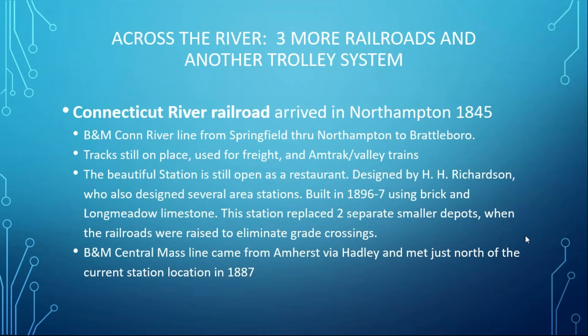Across the river there were more railroads. The Connecticut River Railroad arrived in Northampton about 1845 — that's the B&M Connecticut River line from Springfield through Northampton to Brattleboro. Those tracks are still in place, used by freight, and the Amtrak and the Valley trains run on that now. That beautiful station is still open as a restaurant. It's designed by H.H. Richardson, who designed several area stations — built in 1896 and 1897, using brick and long-meadow limestone. The station replaced two separate small wooden depots when the railroad was raised to eliminate grade crossings. The B&M Central Mass line came over from Amherst via Hadley and joined into that current station in 1887.